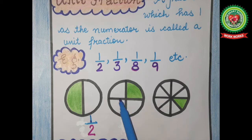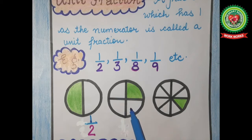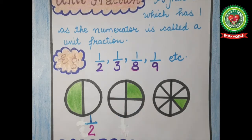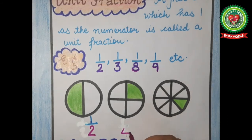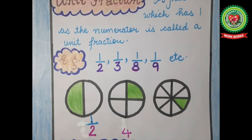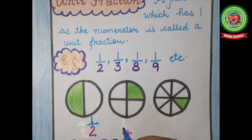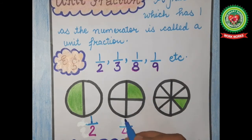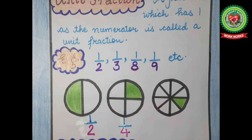Now let's move to the next figure. How many total parts are there? One, two, three and four — total parts are four. And out of these four parts, how many parts are shaded? One part. That means out of four parts, one part is shaded.